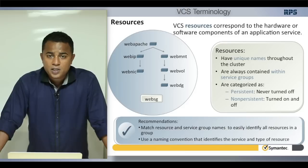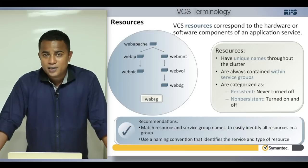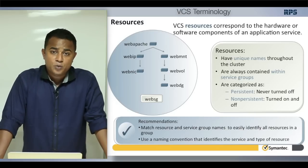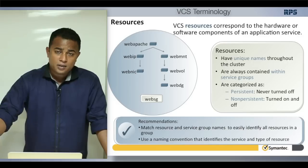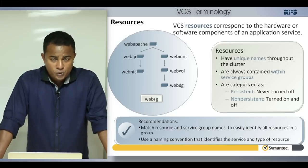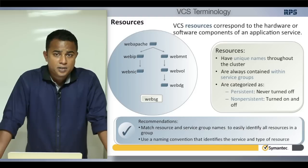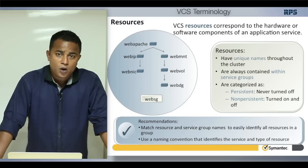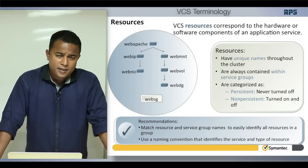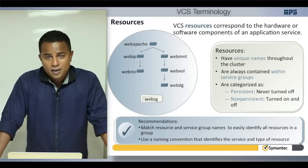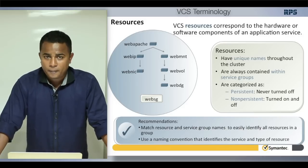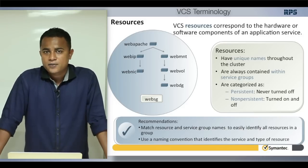The best example of a persistent resource is a NIC. VCS should not bring down the NIC when moving a service between machines — the NIC must remain up so VCS can assign an IP on the interface. Resources managed by the operating system are called persistent resources; resources managed by VCS are non-persistent. Persistent resources cannot be taken offline by VCS, though some can be brought online by VCS.